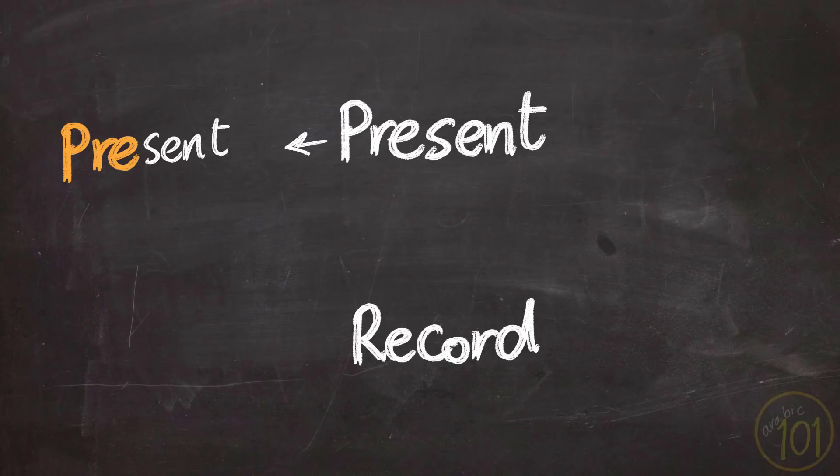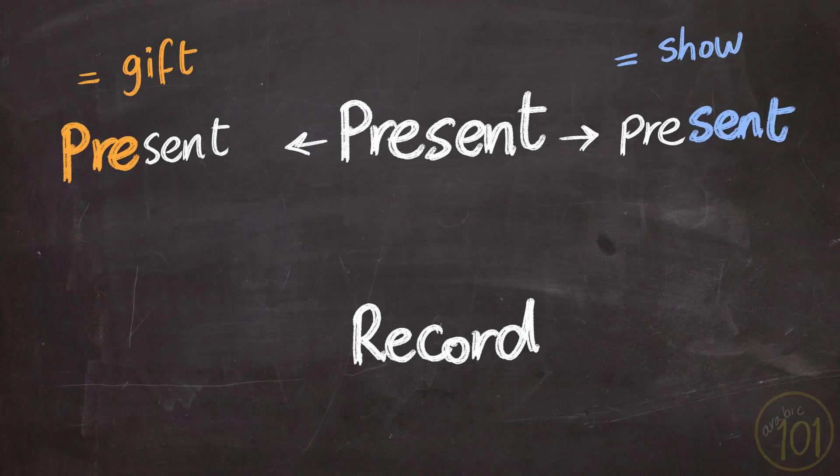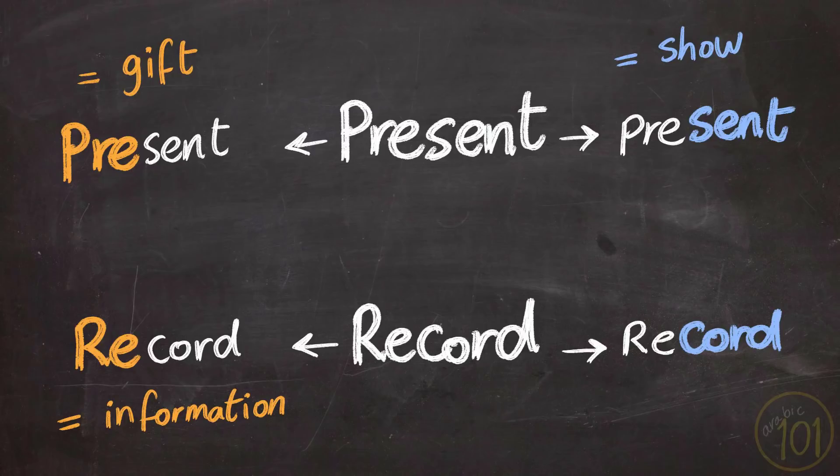A present means a gift and present is a verb that means to show or make something known. And record is a piece of information, and record is a verb that means to store.